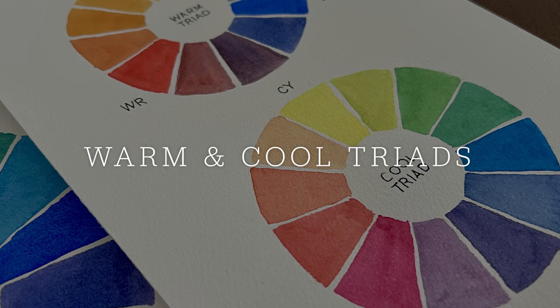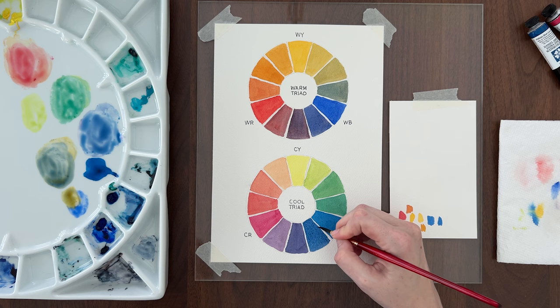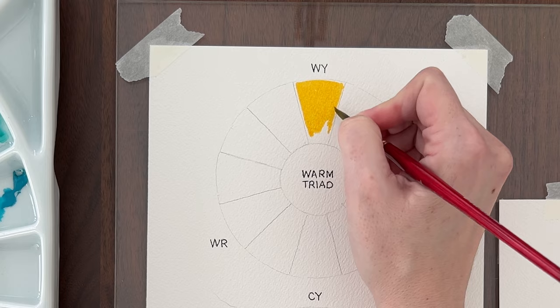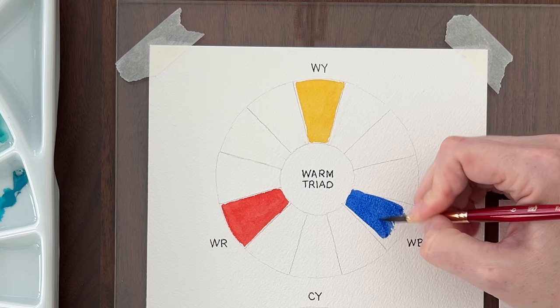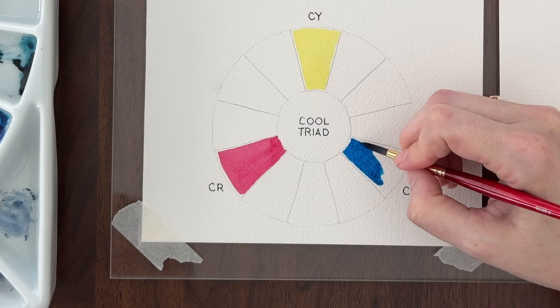The first chart you should make to understand color mixing is a warm triad color wheel and a cool triad color wheel. A triad is simply three primary colors. The warm triad includes my warm yellow, warm red, and warm blue. The cool triad has my cool yellow, cool red, and cool blue.